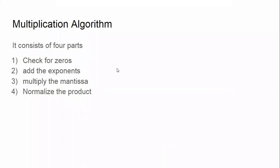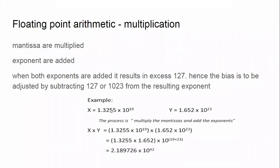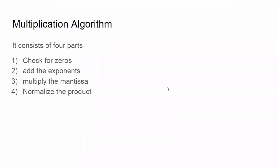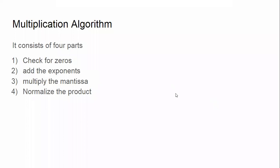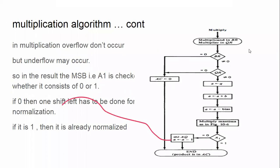Now we'll see the multiplication algorithm for floating point numbers. First, check for zero — if any one of the mantissa parts is zero, then anything multiplied by zero results in zero. Then check for the sign bit. Next, add the two exponents. Then multiply the mantissas. Then normalize the product — either add a bias, subtract a bias, or don't do any adjustment depending upon the answer. In multiplication, overflow does not occur but underflow may occur.